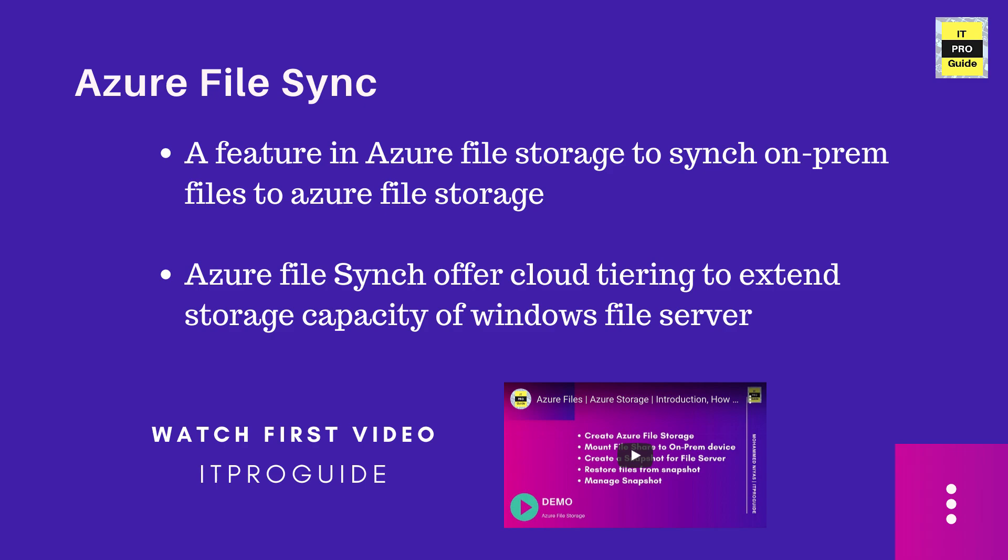By enabling Azure File Sync, you are able to synchronize your on-premises Windows file server with Azure File Storage. One important point you need to realize is Azure File Sync is not just to have a copy of your file server in Azure File Storage — it helps you to extend the storage capacity. When you have an issue with storage capacity, Azure File Sync can provide cloud tiering, which means less frequently accessed data can be tiered to cloud.